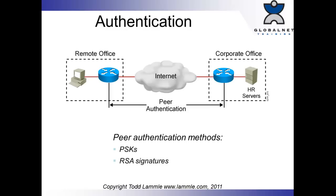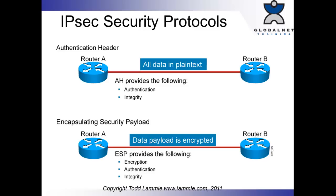Don't forget authentication. From remote office to corporate office and back, we can do peer authentication using RSA signatures. For IPSec security protocols, we can authenticate the header by encrypting it with authentication integrity — this is called AH, or Authentication Header. Then there's encapsulating or encrypting the payload within the IP packet. Remember, VPNs are Layer 2 but IPSec is Layer 3. ESP provides encryption, authentication, and integrity. You can do AH with ESP when configuring IPSec, but the more you do, the more overhead you'll have.